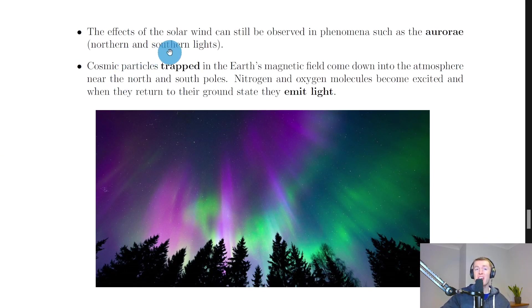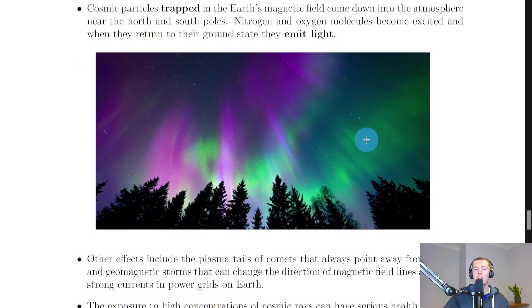The effects of the solar wind can still be observed in phenomena such as the aurorae, which is the northern and southern lights. Their specific names are the aurora borealis and the aurora australis. The reason these nice effects of green and purple lights are produced is because cosmic particles trapped in the earth's magnetic field come down into the atmosphere near the north and south poles. They interact with air molecules like nitrogen and oxygen, and nitrogen and oxygen molecules become excited. When they return to their ground state, they emit light. The light that is emitted corresponds to the green and purple regions of the visible light spectrum.